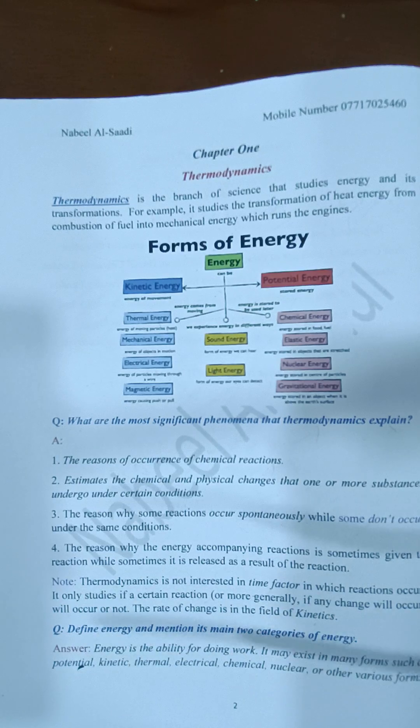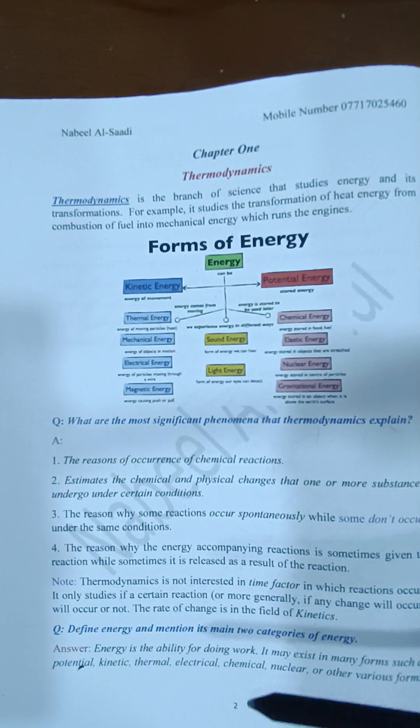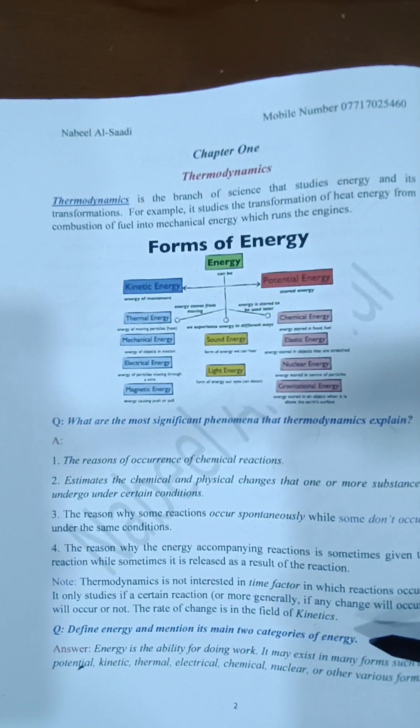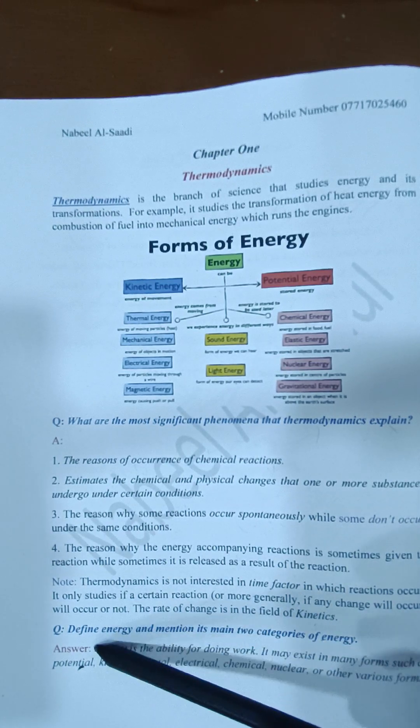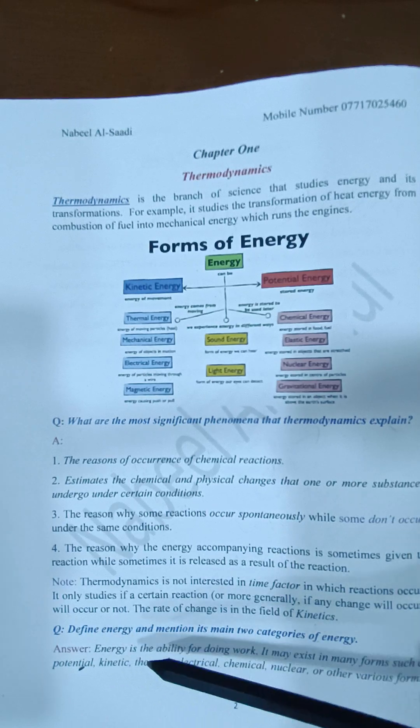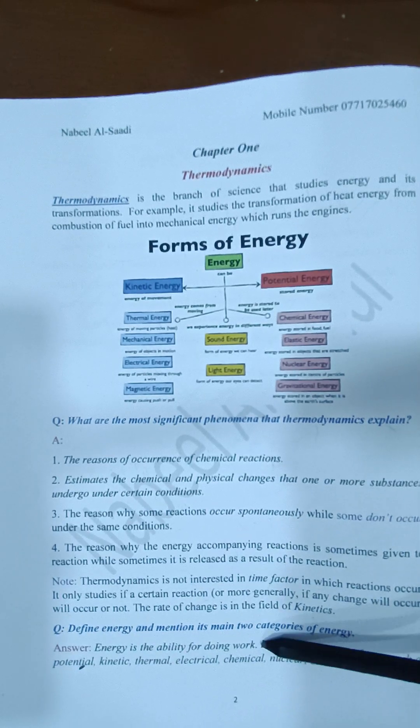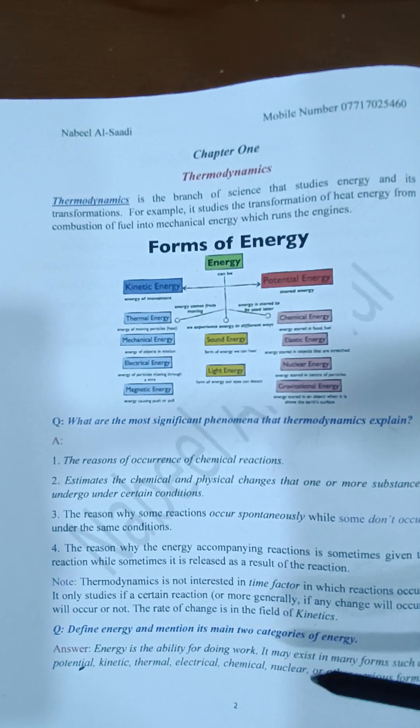The second question is, define energy and mention its main two categories. Energy is the ability for doing work. This is the main definition of energy, is the ability for doing work.